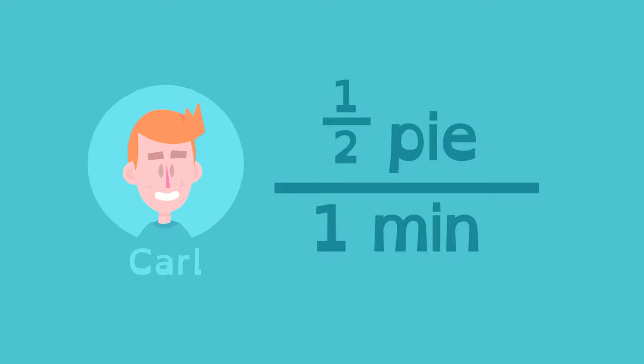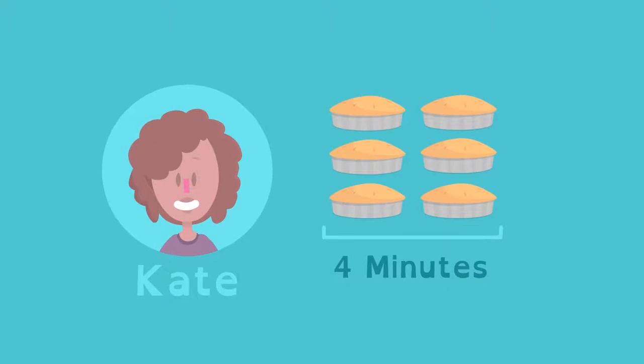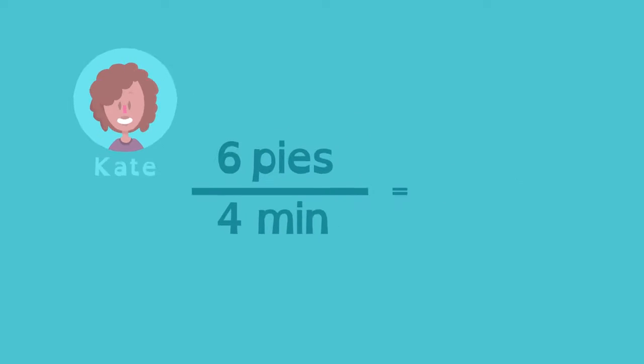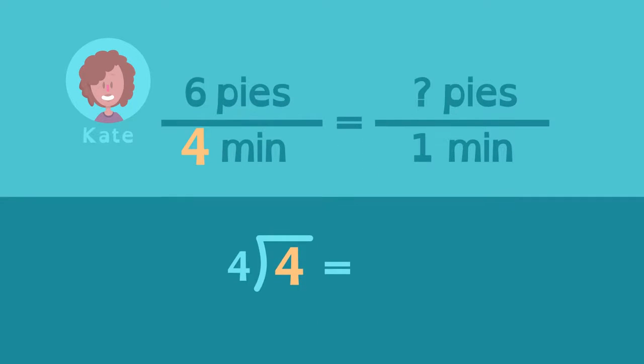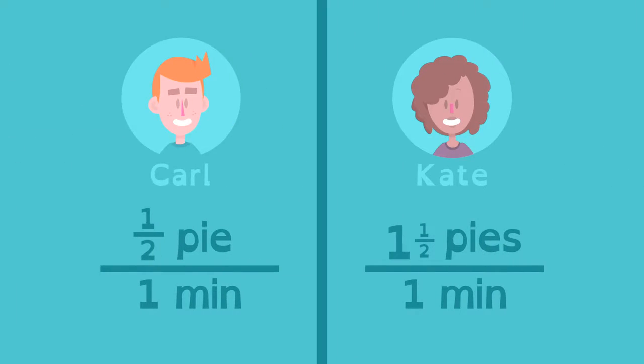We can calculate Kate's unit rate too. She can eat six pies in four minutes. How many pies can she eat in one minute? Four divided by four is one, so six must be divided by four. The unit rate for Kate is one and a half pies per minute.